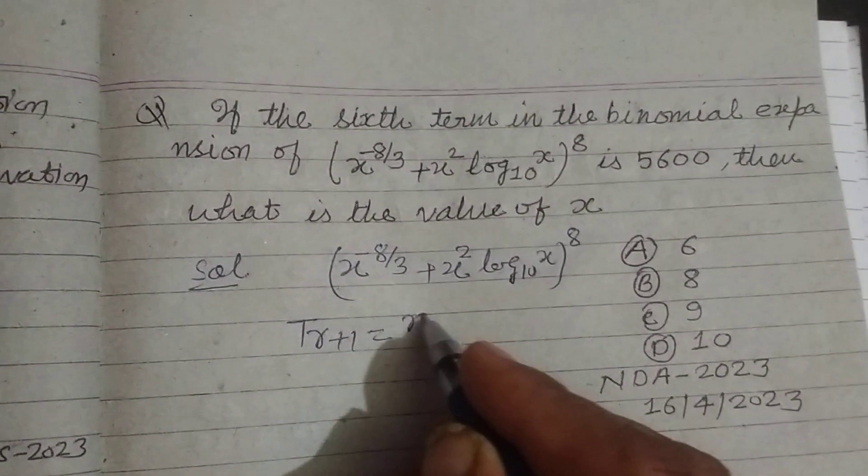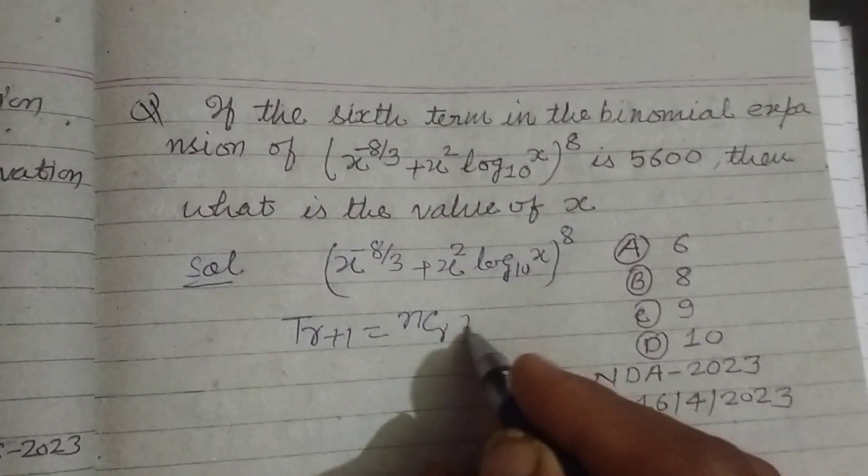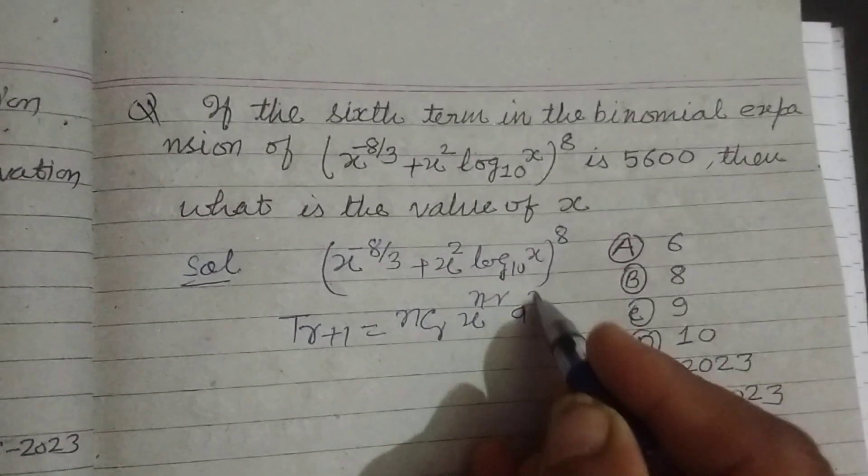The T(r+1) term in the expansion is nCr times x to the power (n-r) times a to the power r.